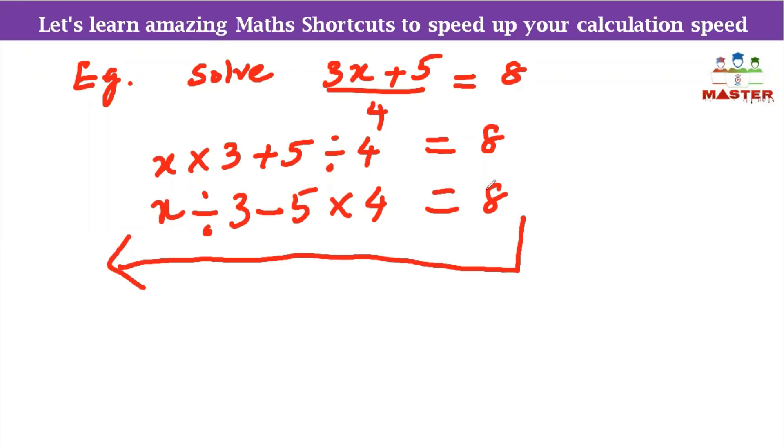8 into 4, so 8 into 4 is 32. Next, 32 minus 5 is 27. So next, 27 divided by 3 is 9. Therefore, x equal to 9. This is the transpose method to find out the answer x equal to 9.